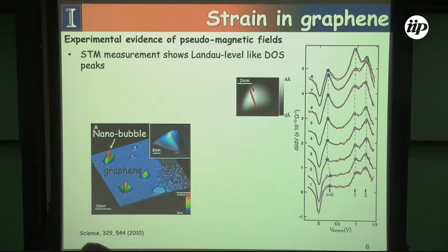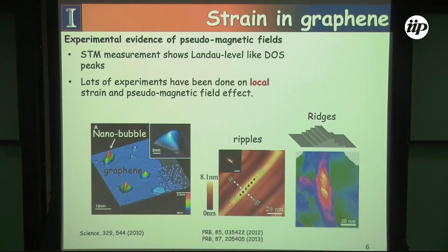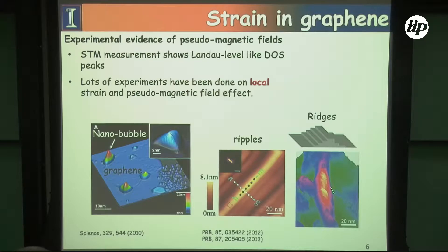The pseudo-magnetic field doesn't break time reversal symmetry — it changes sign at different valleys — but you can definitely see Landau level formation. There are other types of experiments we could do, like using ripples or ridges to induce strain in graphene, but this isn't really going to be controllable.